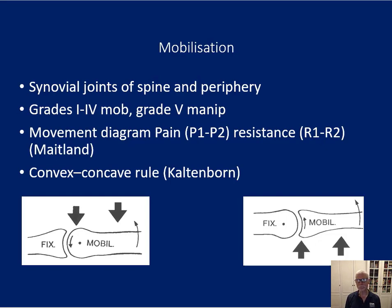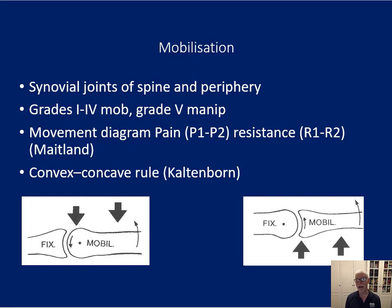Later on, more research was done, which often challenged the original belief — not necessarily the effectiveness of the technique, but the model of how that effect occurred. Mobilization techniques move joints normally within their normal range of motion. If you're increasing beyond their normal range, that would typically be a manipulation. Another way to differentiate is by the speed and force: a more rapid, more forceful technique tends to be a manipulation, whereas less energy going into the tissues tends to be a mobilization — originally named for joints, but nowadays also used for soft tissue.